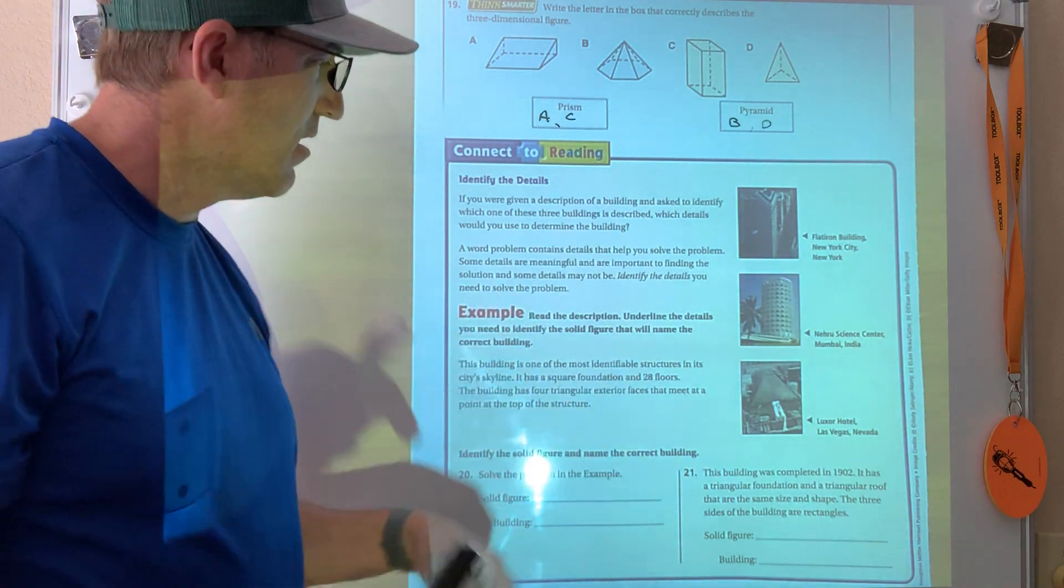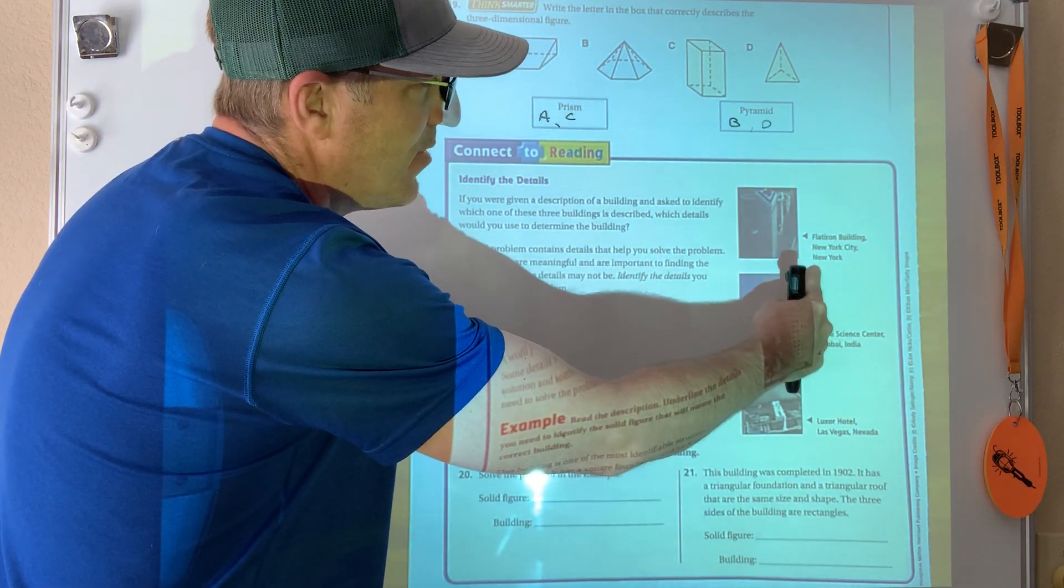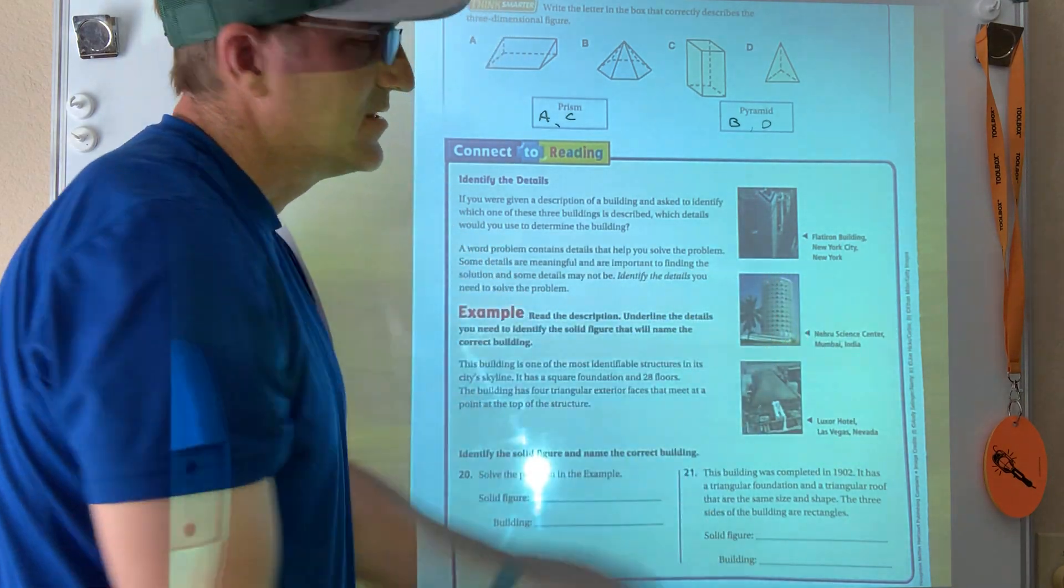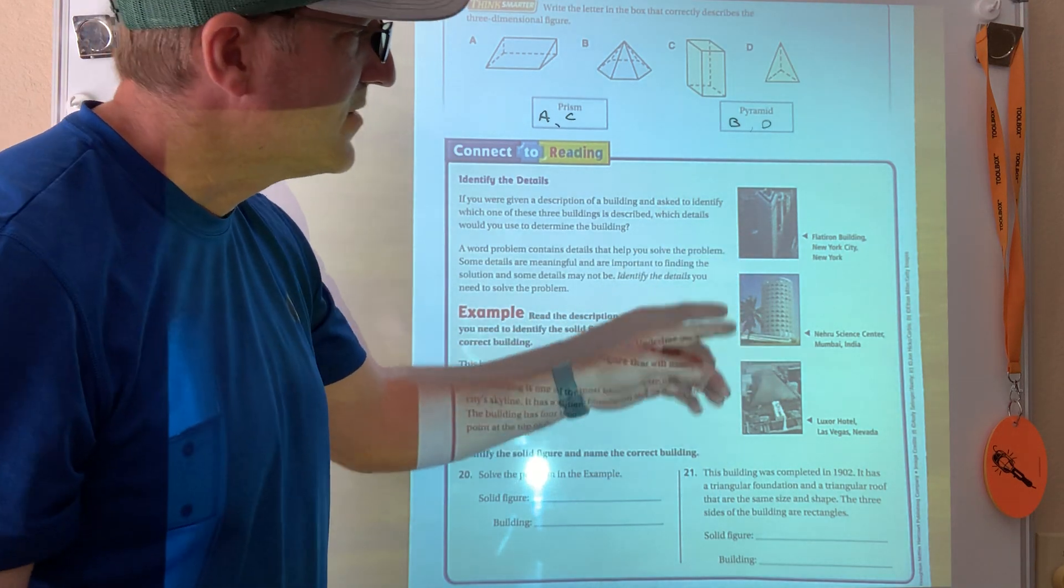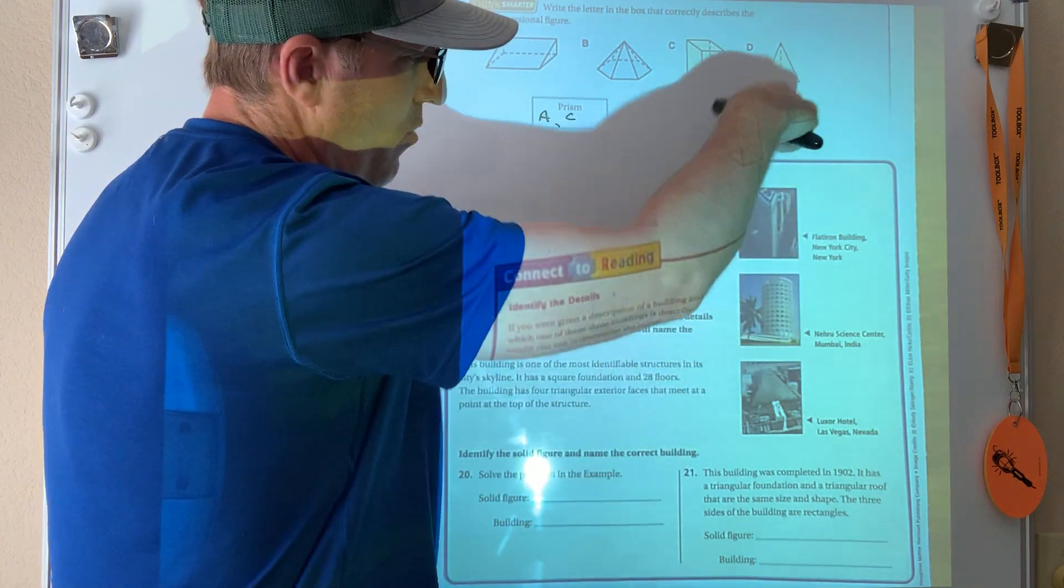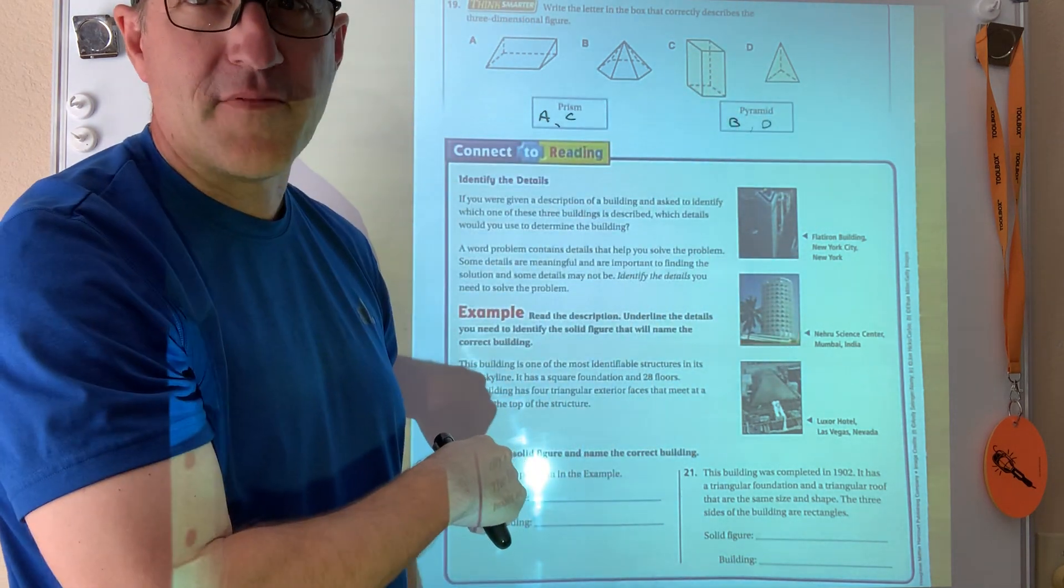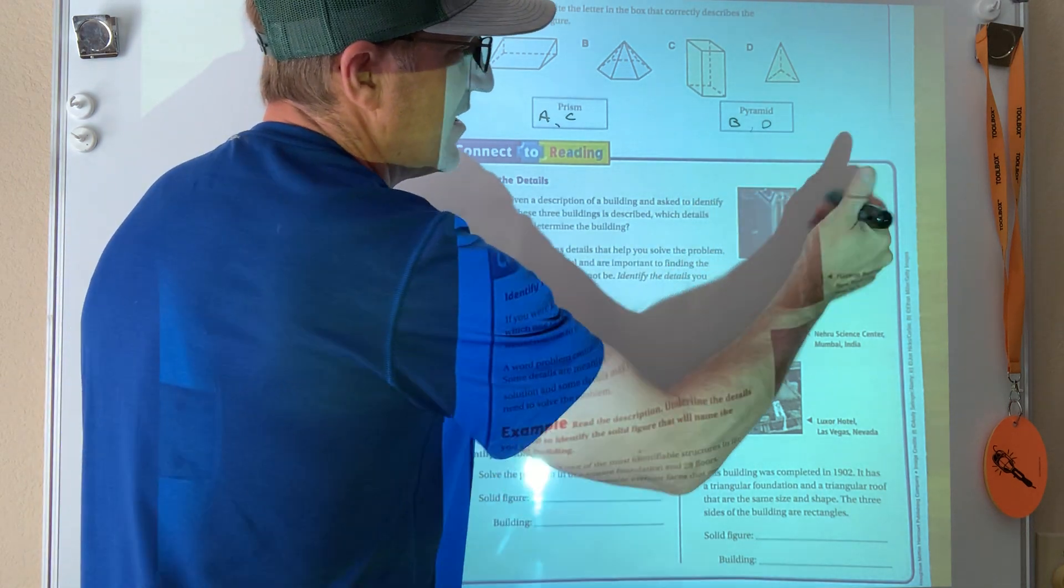All right, so identify the details. So we've got these three buildings. The Flat Iron Building in New York City. It's kind of probably hard to see on my screen because it's even hard for me to see it on here. But to me I see that it has rectangular sides, right? And it doesn't come to a point. I'm not afraid to sit on top of that building and I've got triangles. So I look at this and I see a triangular prism.